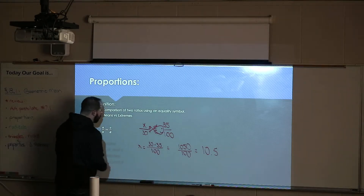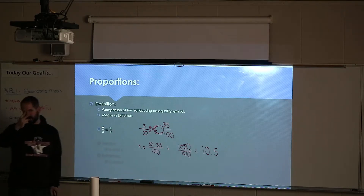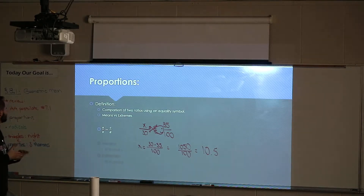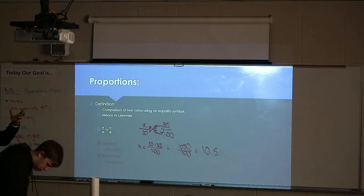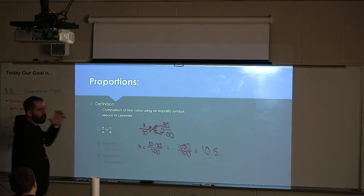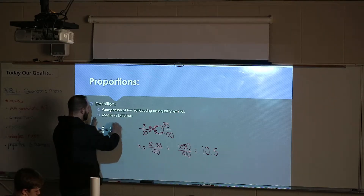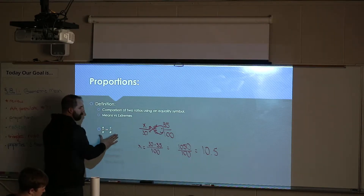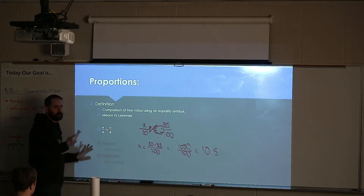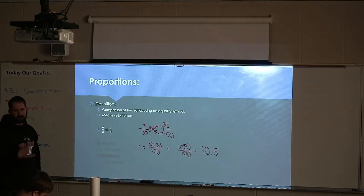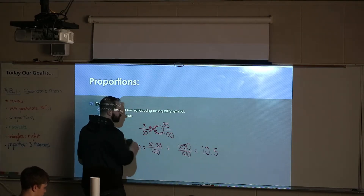Now let's talk about the vocab words: means versus extremes. The goal of today — if you look at the title of this section — is to talk about what a mean is, like a geometric mean for a picture. I want to talk about how to find that number, especially as it applies to proportions. What happens when I'm missing two numbers in that fraction? You can actually still solve it, but they have to be in very specific spots.